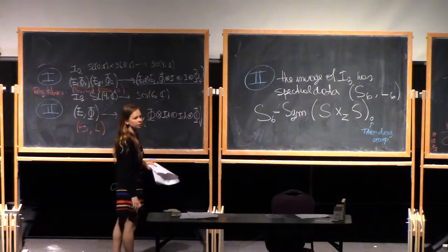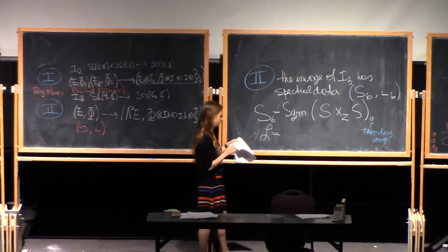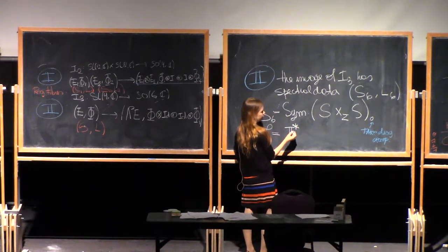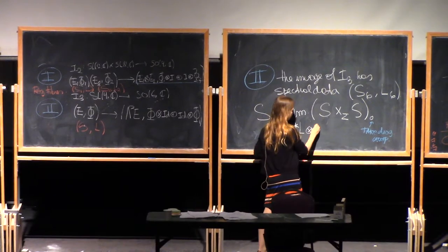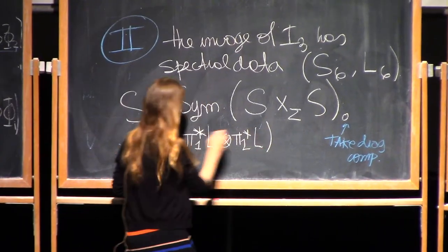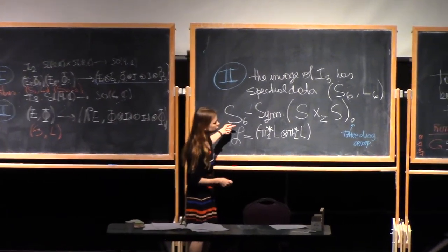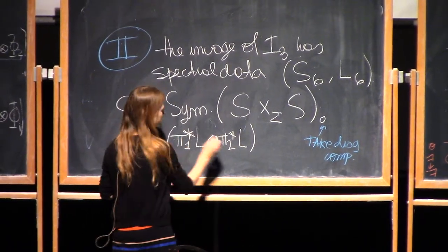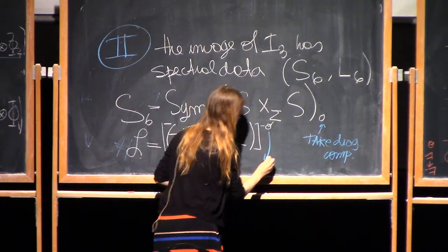Once I do that and symmetrize it, I have the sixth cover that I want. Then the line bundle L is going to be the pullback under the two projections — just like before, but of the same curve — so π_1 pullback of L and π_2 pullback of L. We don't want all of it, since that wouldn't give us orthogonal Higgs bundles. Orthogonal Higgs bundles correspond to spectral data in a Prym variety — so it's anti-invariant objects under the involution σ — so we take the anti-invariant part.